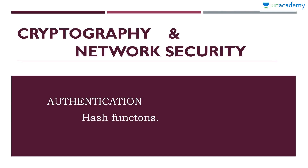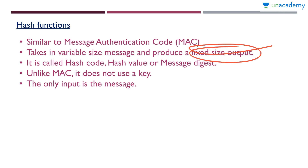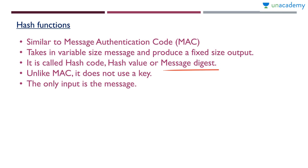In the previous lesson we learnt Message Authentication Codes, and in this lesson we have hash functions. So what are hash functions? These are similar to Message Authentication Codes. They take in a variable sized message and produce a fixed size output, just like Message Authentication Codes. But this fixed size output is called hash code, hash value, or Message Digest. In the previous lesson when we studied MAC, the output was called checksum or MAC.